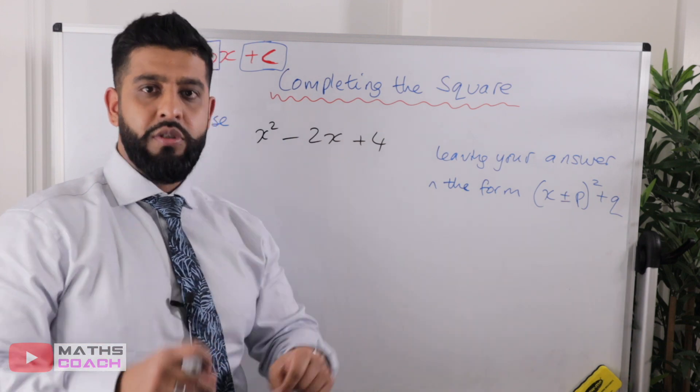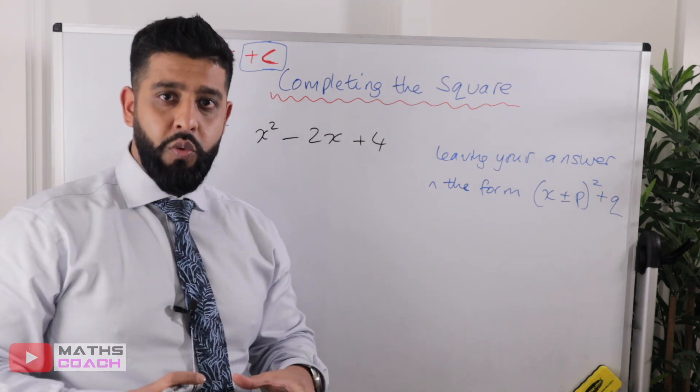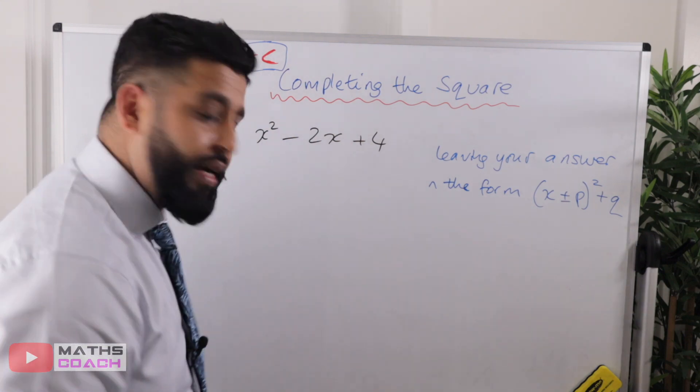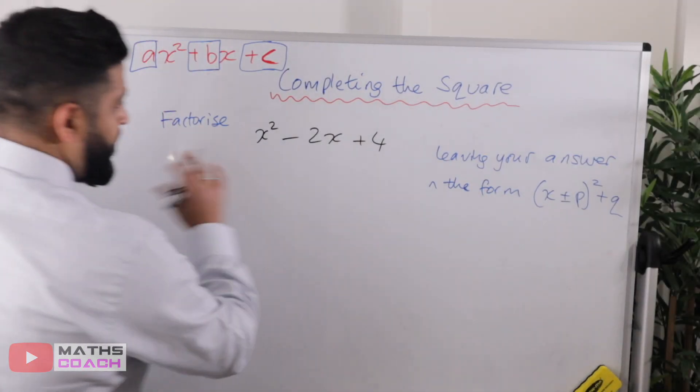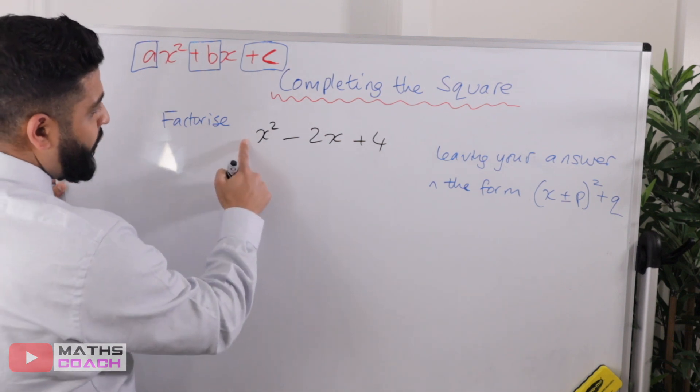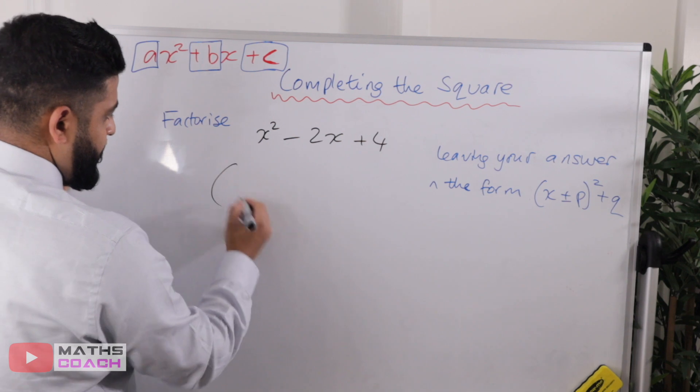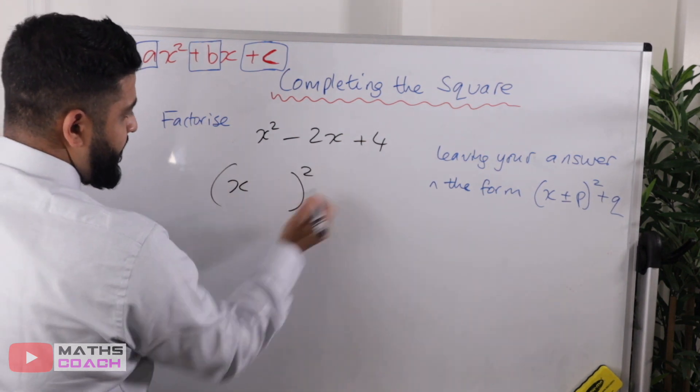Why don't you try this one, pause the video, do your own working out, and then press play again, and then compare it with my answer. Okay, so once again, step number one, let's ensure that the coefficient of x² is one. Yes, it is. So that's good to go. Here's my bracket.